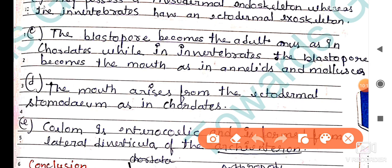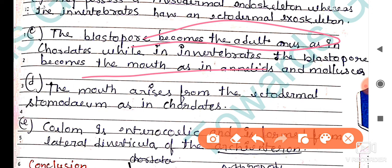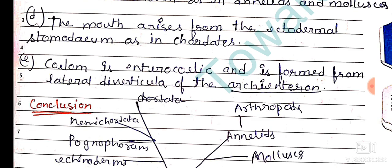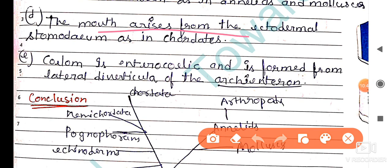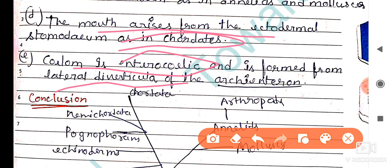In echinoderms, the blastopore becomes the adult anus, like in hemichordates. But in other invertebrates such as annelids and mollusks, the blastopore becomes the mouth. The mouth arises from the ectodermal stomodeum, as in chordates. The coelom is enterocoelic — it is formed from the lateral diverticula of the archenteron.